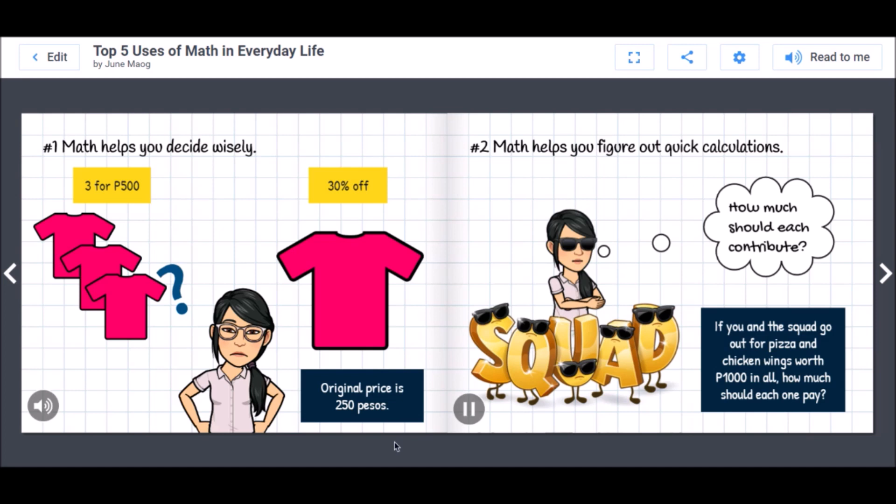If you and your five friends decide to go out for pizza and chicken wings worth 1000 pesos, how much should each one pay? Doing a quick calculation, you figure out that this is 166 pesos and 67 centavos. But what if one friend has no budget? What if one friend shoulders the first 300 pesos? Knowing basic operations in math will help you figure out your contribution no matter the situation.